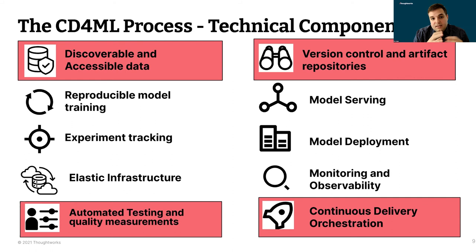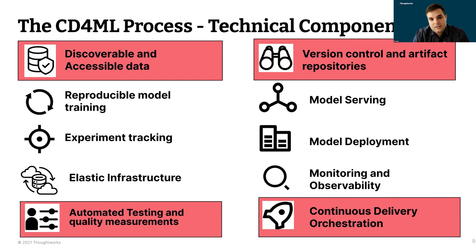Automated testing and quality measurements are key to continuous delivery and making your model production-ready. Testing ensures everything is right — if accuracy starts to trend downward, you stop the deployment, keep the existing model, and let the team investigate why. Is there something new about your users you didn't know? Is there a new feature you weren't aware of? Making sure testing and quality tracking are solid will enable the improvement cycle.